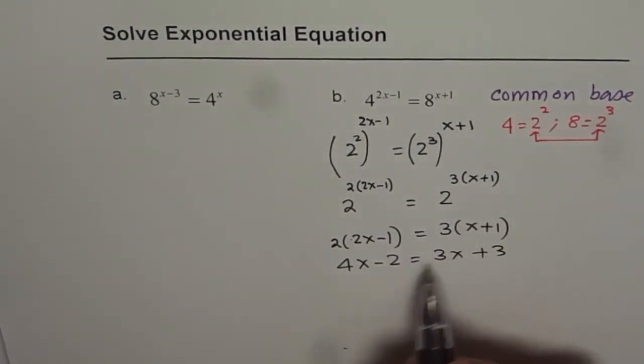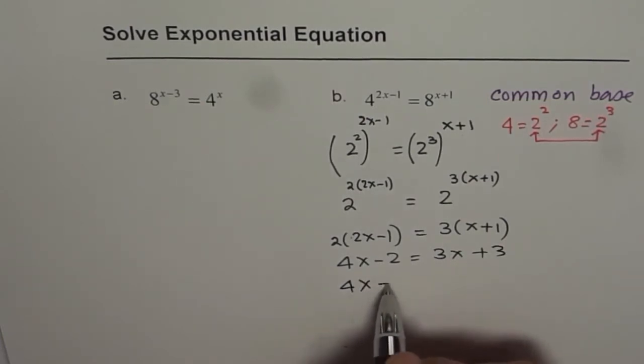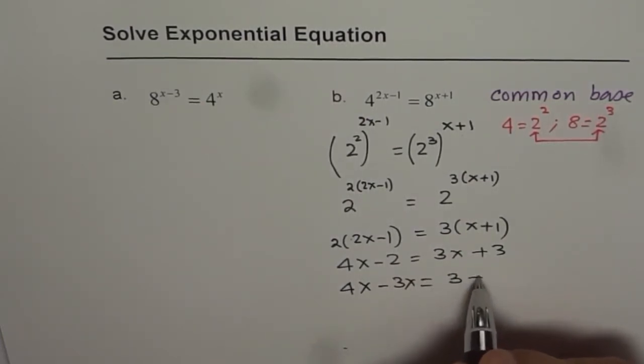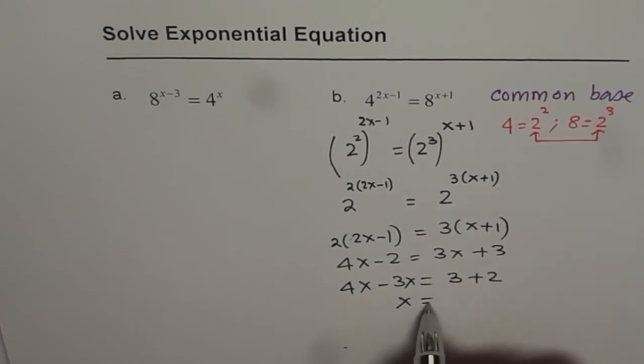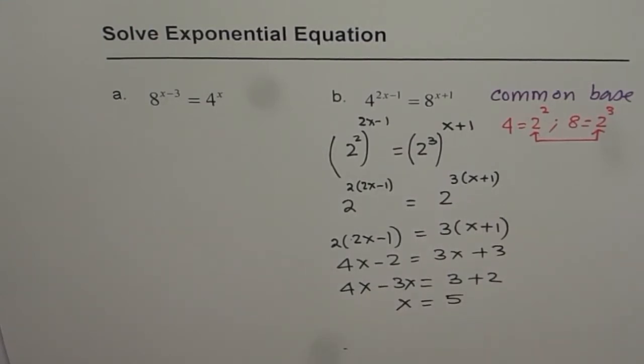Bringing x together gives us 4x minus 3x equals 3 plus 2, or x equals 5. So x equals 5 is our answer. We can write down the solution as x equals 5.